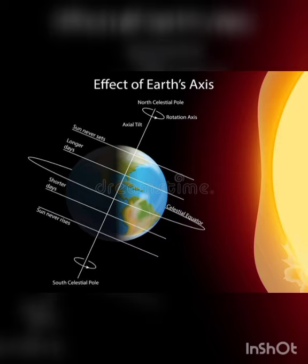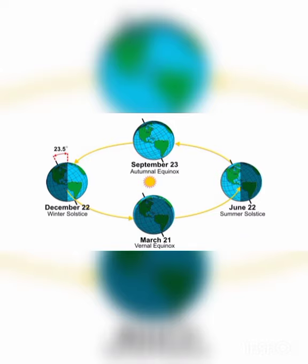As the earth goes around the sun, one season follows another in a continuous cycle. This happens year after year. This regular movement of the seasons never changes. The rhythm of the earth never changes because the revolution of the earth never changes.